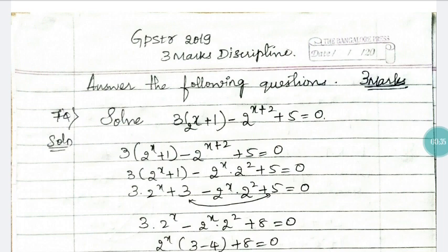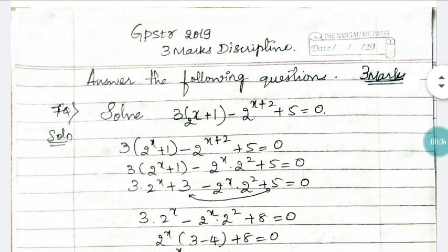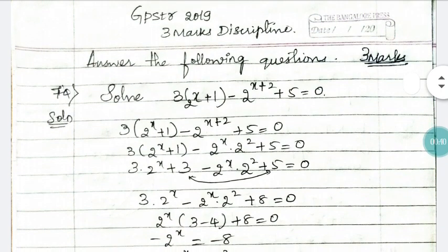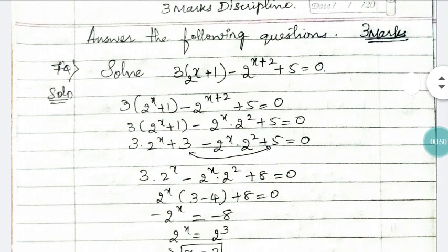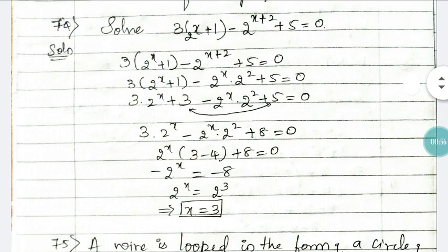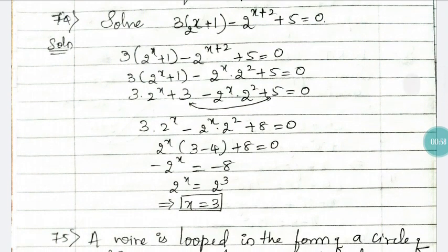In question number 74, they are asking to solve the equation — you can see it clearly. Write down the same equation and try to simplify it by using the law of indices. Add the numbers, then shift terms to the other side to get the answer. You are going to get the answer as x is equal to 3.